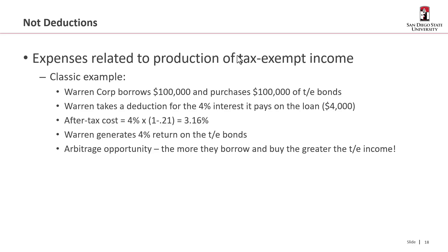That creates an arbitrage opportunity — the more they borrow, the more they buy, the greater the tax-exempt income. They could borrow a billion dollars, purchase a billion dollars worth of bonds, and ultimately make money. The code doesn't want to reward that kind of gain with no economic risk, so they shut down the idea that you can take a deduction for expenses related to the production of tax-exempt income.